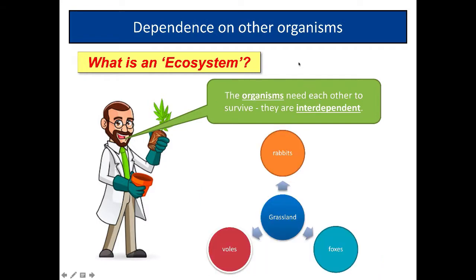Now we've talked about dependence on other organisms. The organisms in an ecosystem need each other to survive; they're what we call interdependent. Inter means between, so they depend upon each other.